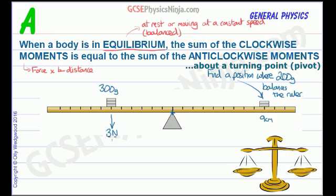The 300 grams, or the 3 newtons, is at 6 centimetres from the pivot.